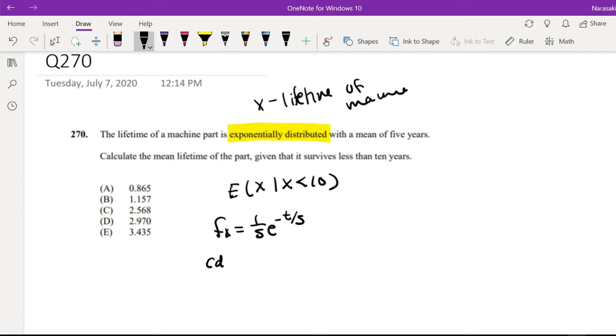And the CDF, F(x), is defined to be 1 minus e to the negative t over 5.